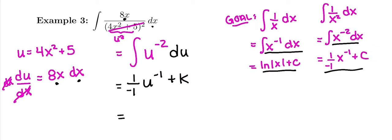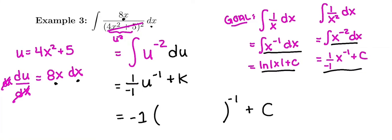Lastly, switching it out for x's. 1 divided by negative 1 is just negative 1. We're going to put our x's in here, raised to negative 1, and then plus c. I just need to look back at what u was. So I'm going to replace u with 4x² + 5, being raised to the negative 1 power plus c.